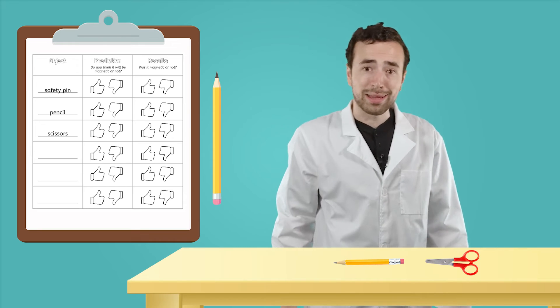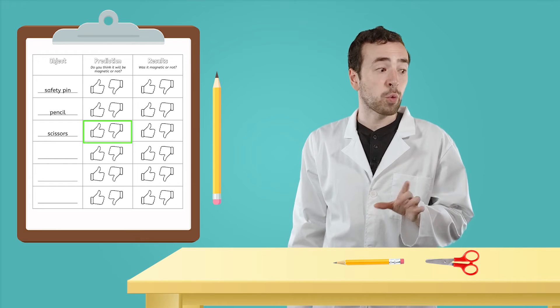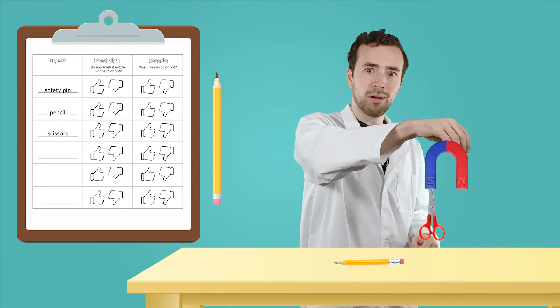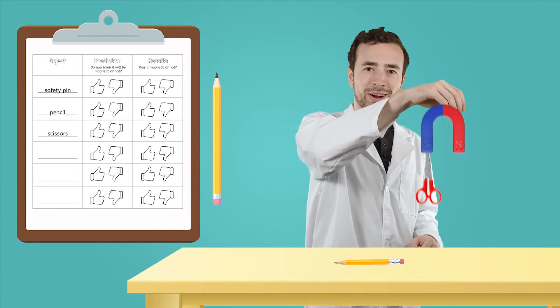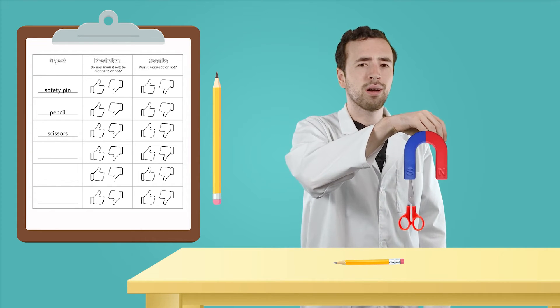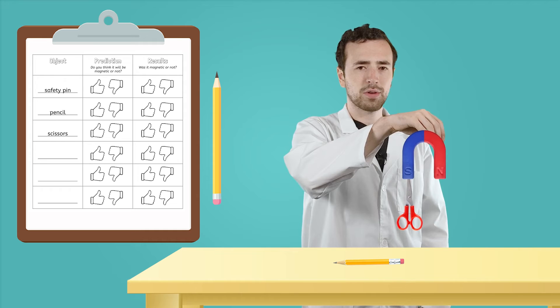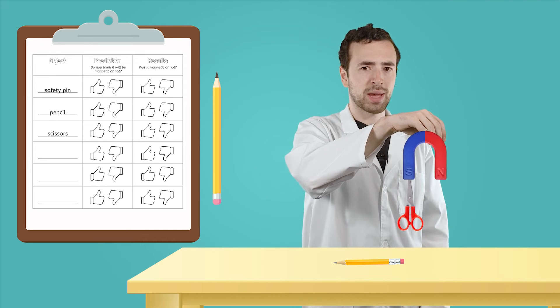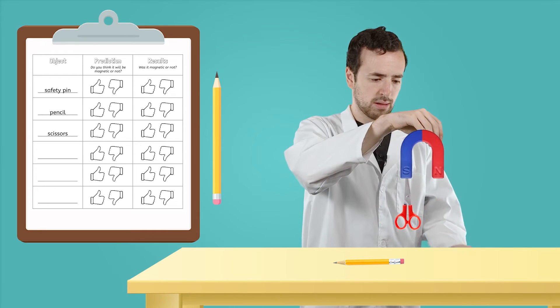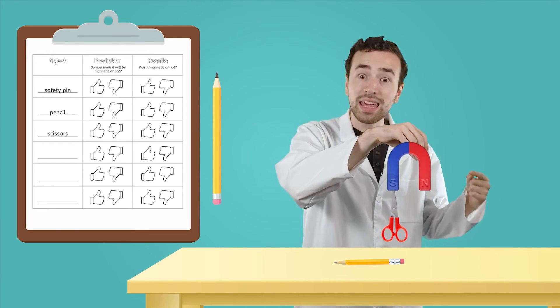And finally, we have scissors. Make your prediction. Will the scissors be magnetic or not? Let's find out. Wow! The scissors are magnetic. But are you noticing what I'm noticing? Only the metal part of the scissors is sticking to the magnet. I wonder if the plastic part of these scissors is magnetic too. Let's find out. Yeah, the plastic is not magnetic, but the metal part is.